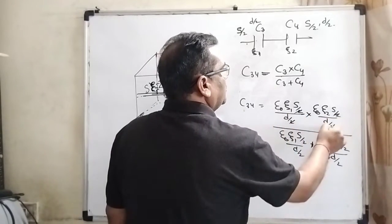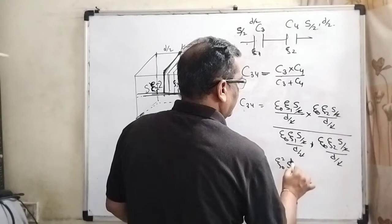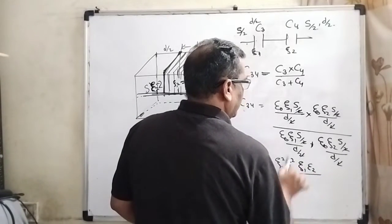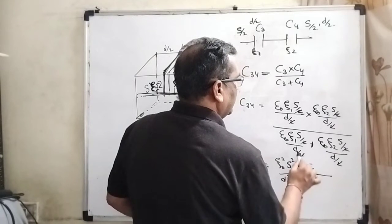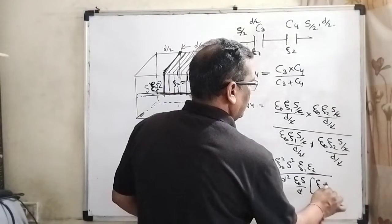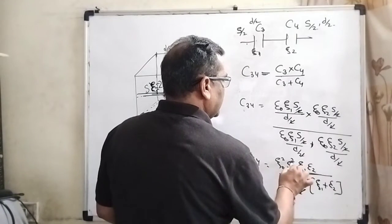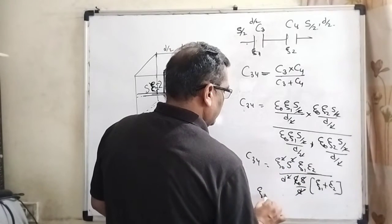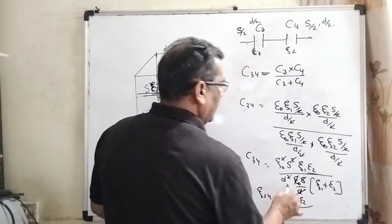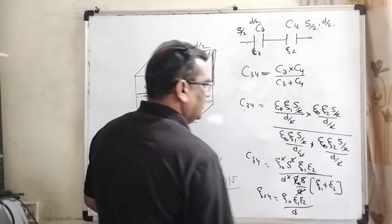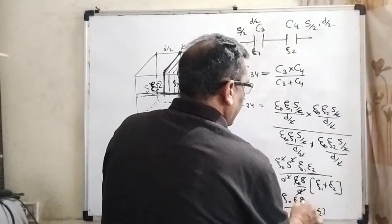The 2s cancel out in numerator and denominator. After simplification, the numerator becomes epsilon 0 squared times S times epsilon 1 times epsilon 2, and the denominator has epsilon 0 times S times d common, leaving epsilon 1 plus epsilon 2 in the bracket. After all cancellations, the remaining expression is epsilon 0 times epsilon 1 times epsilon 2 times S, divided by d times (epsilon 1 plus epsilon 2).